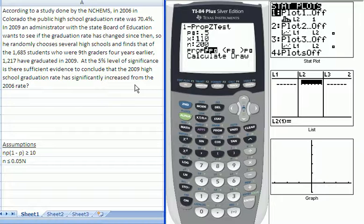So this result being slightly greater than 70% pops the question. At the 5% level of significance, is there sufficient evidence to conclude that the 2009 high school graduation rate has significantly increased from the 2006 rate?